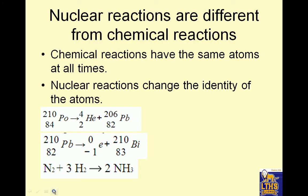Nuclear reactions are different from chemical reactions in a couple of ways. The main way is that chemical reactions have the same atoms at all times. Here's a chemical reaction: nitrogen stays nitrogen, hydrogen stays hydrogen. Nuclear reactions change the identity of the atoms — polonium turns into lead and helium, lead turns into a beta particle and bismuth. So they change.